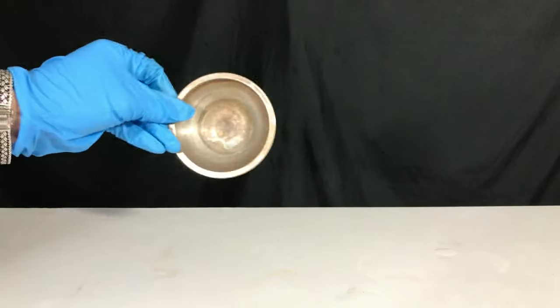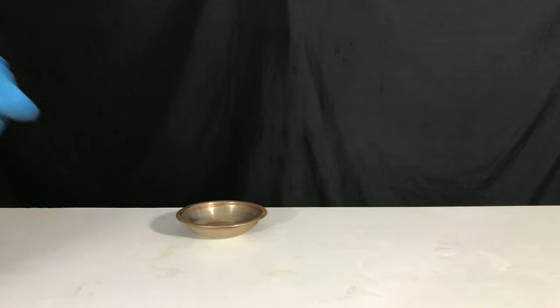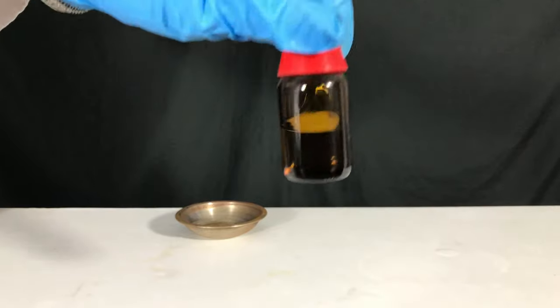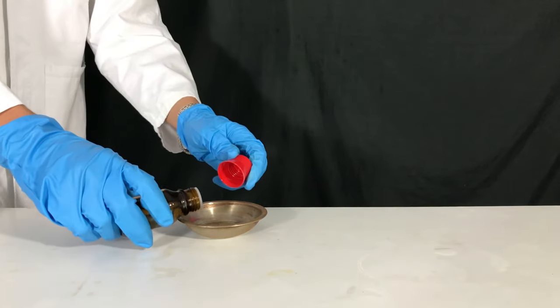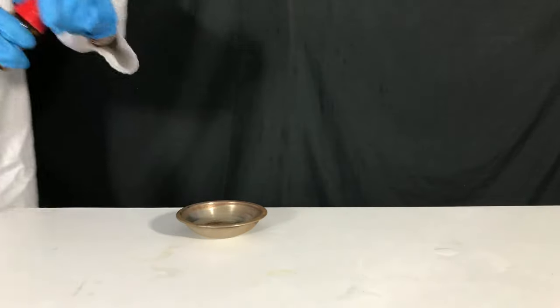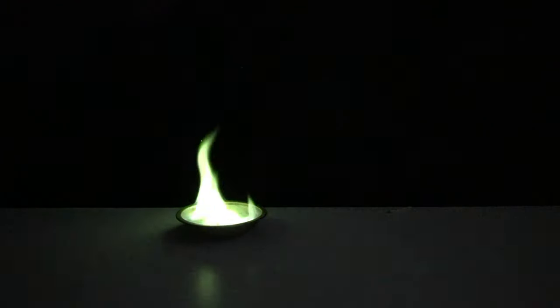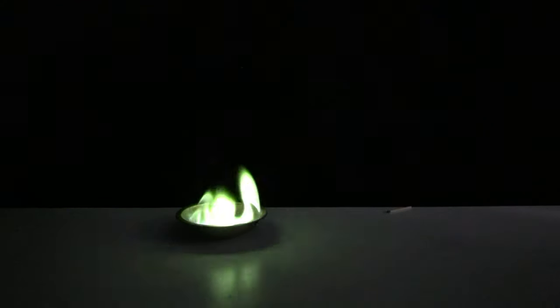And now for the fun part that you all waited for. Now we take a burning dish. We start off by taking some of the methanol tri-methyl borate that came over second. The lights are turned off and we light it up. A nice green flame can be observed.